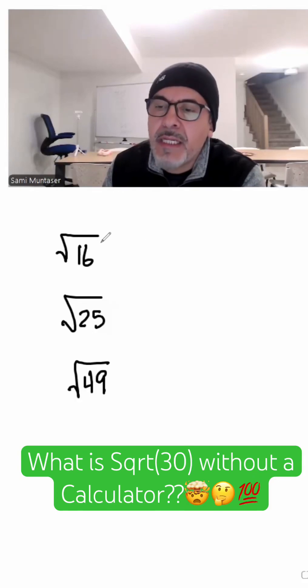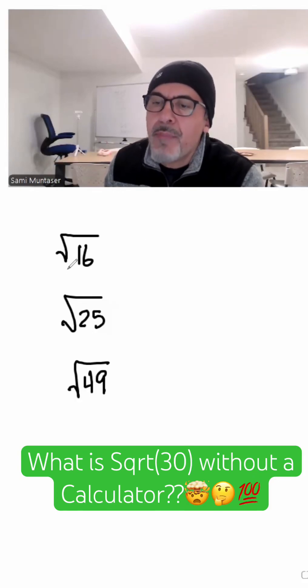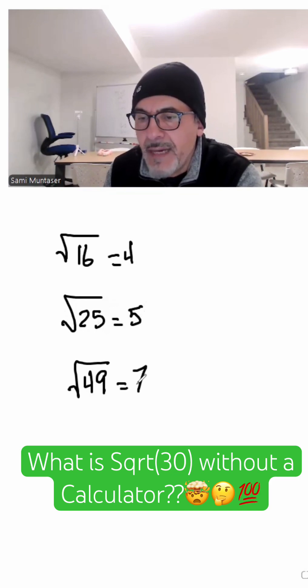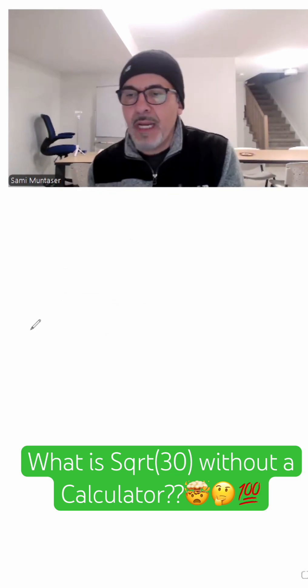Today we're going to tackle finding the square roots of imperfect squares. If we're asked to find the square root of 16, we know that's 4. Square root of 25 is 5. Square root of 49 is 7. But that's not what we're after today.